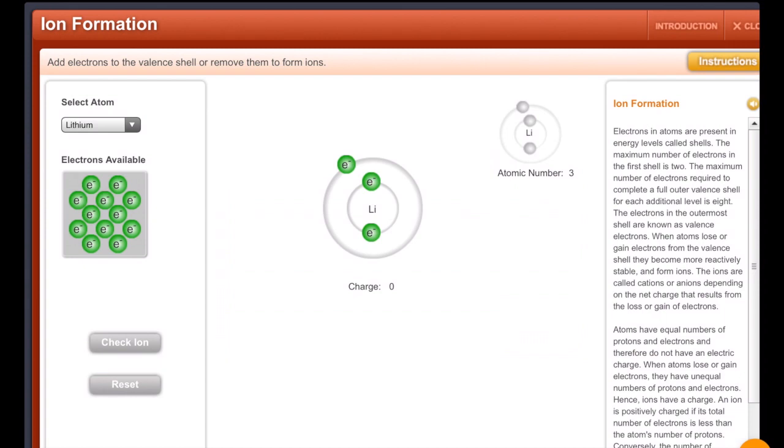And now what we're going to do is create ions, stable ions, of these atoms. So here in the middle, I see lithium with its three electrons, because lithium's atomic number is three. And I'm going to think about what kind of ion would it want to make.